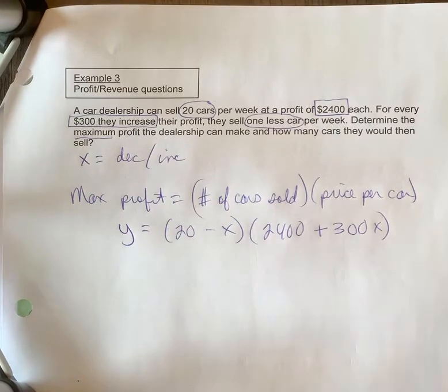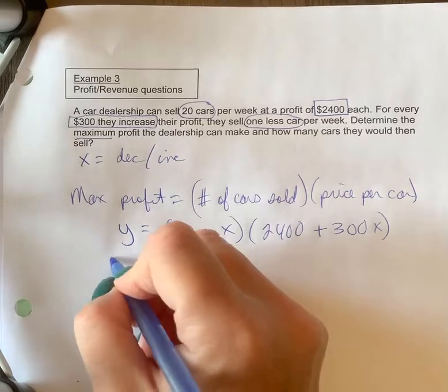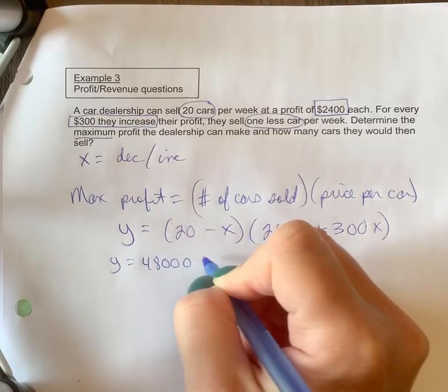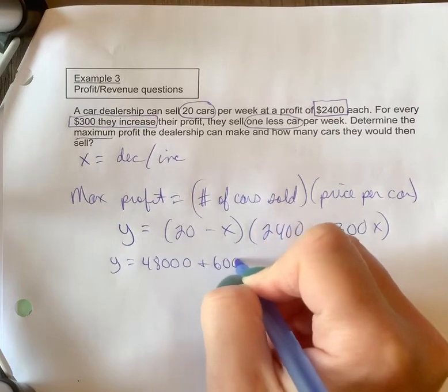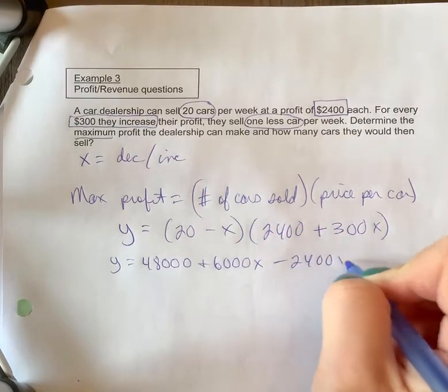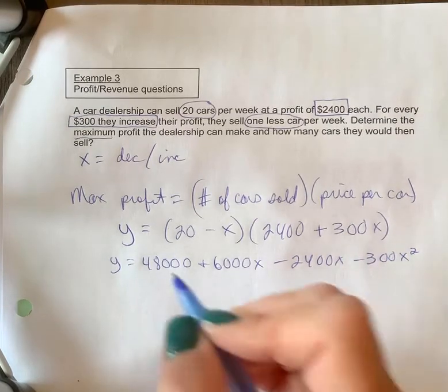All right, now you're going to FOIL this out so that you can complete the square. So FOIL this out—you can kind of do that on your own if you wish and pause the video and look at the answer after. I'm going to combine like terms,